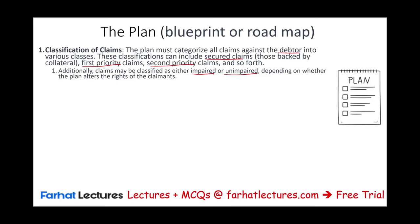There should also be no unfair discrimination and everything should be fair and equitable. In a cram down, the court essentially overrides the rejection of the plan by some impaired classes, under the justification that the plan meets the criteria of fairness and non-discrimination. This provision ensures that a single class of creditors cannot unreasonably prevent the reorganization of a financially troubled company, provided the plan is fair and viable.